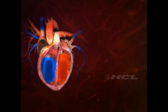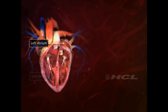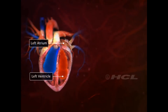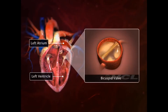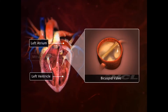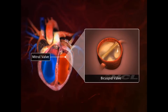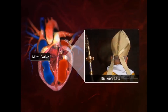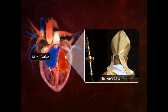On the other side, the left atrium and ventricle are connected through a bicuspid valve. The bicuspid valve is also called the mitral valve because of its resemblance to a bishop's two-sided mitre or hat.